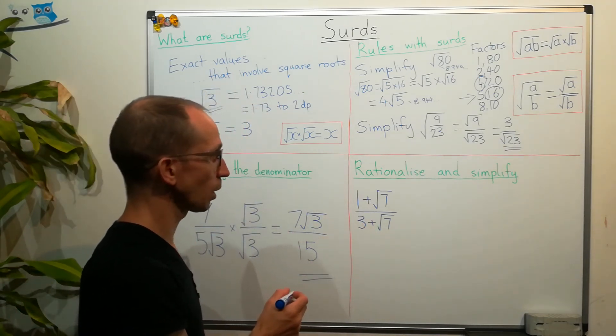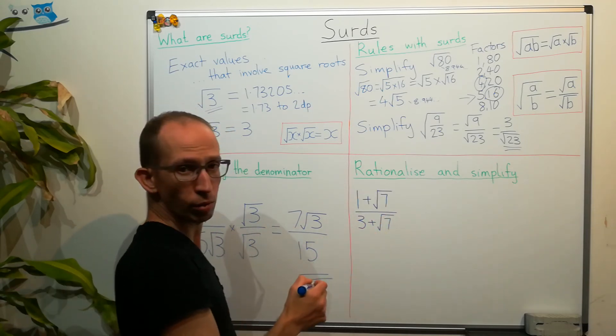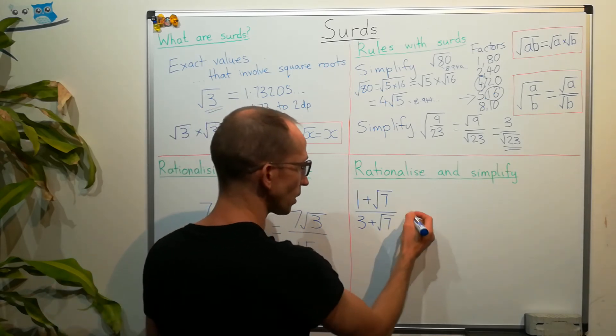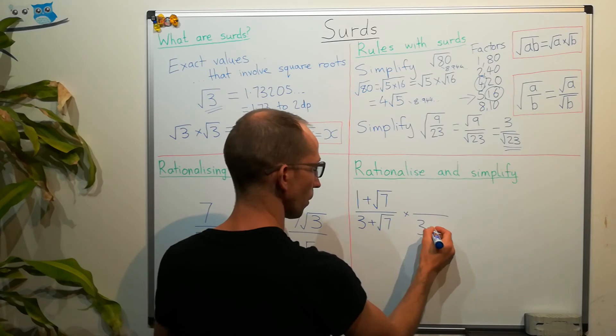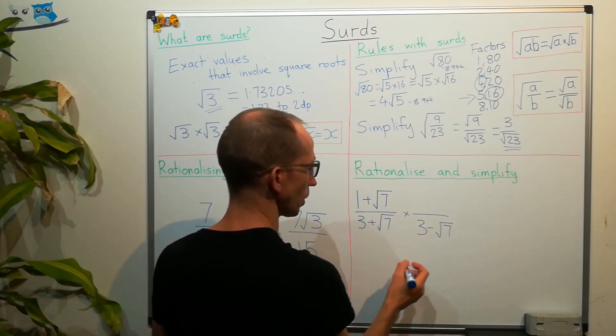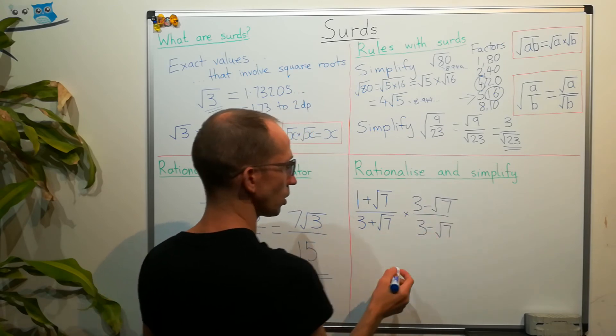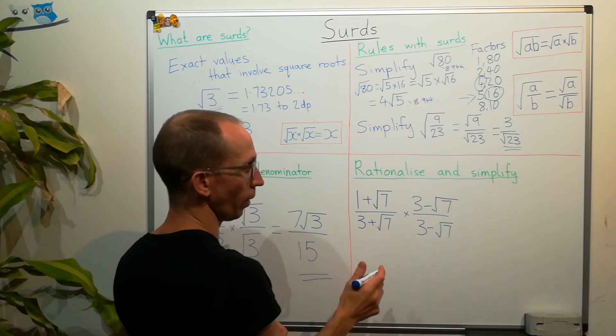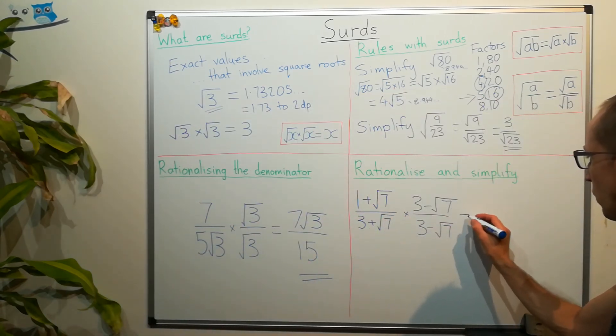Now, here we've got something similar. We're asked to rationalize and simplify. So, we want to get rid of this square root 7. So, we're going to need to multiply by square root 7, but we need to do a little bit more than that. So, what we're going to multiply by is actually 3 minus square root of 7. And again, whatever we have at the bottom, we do the same at the top. So, this is still equal to 1. So, we just multiply our fraction by 1. But by doing it in this way, if we work with the denominator first,